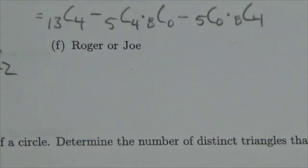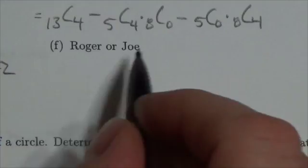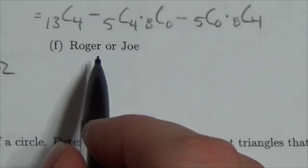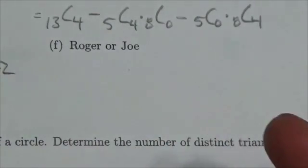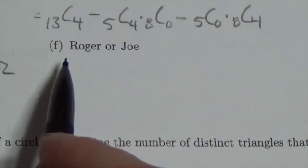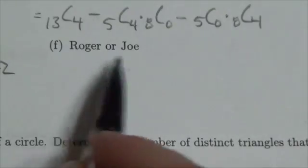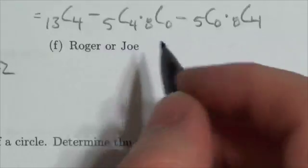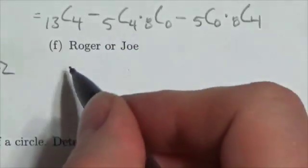Now in the context of a math question, that word 'or' has a very specific meaning. We will always use 'or' in the inclusive sense, meaning this could be Roger or Joe or both. 'Or' will always have that inclusive meaning where we're including both of them together.